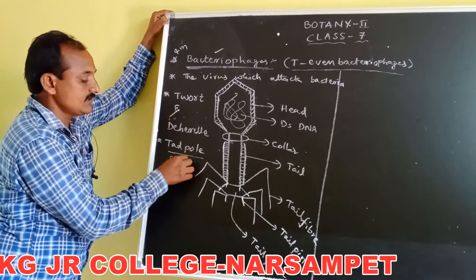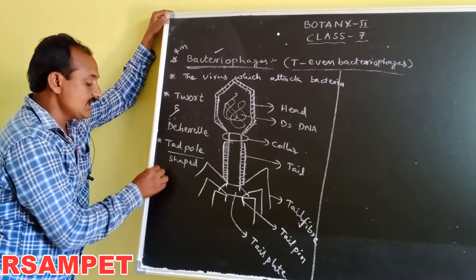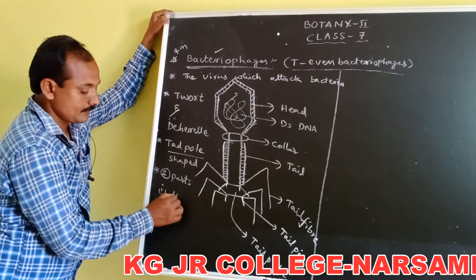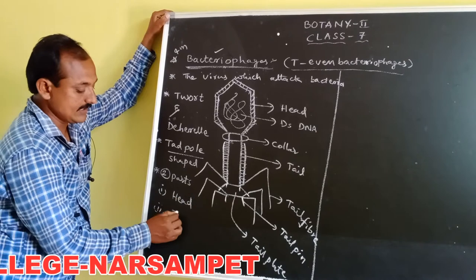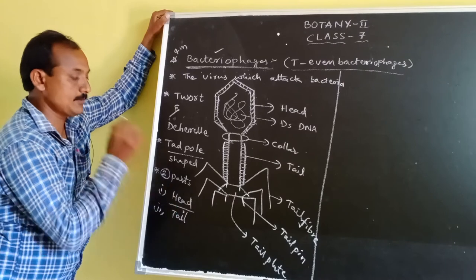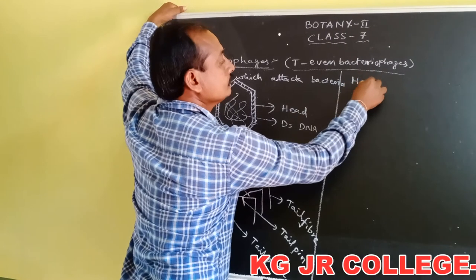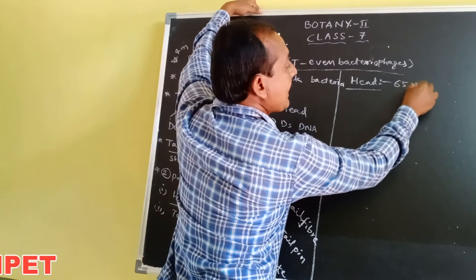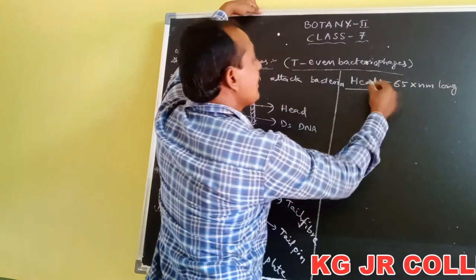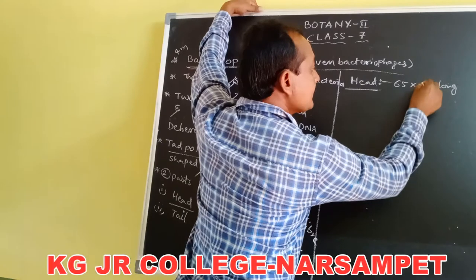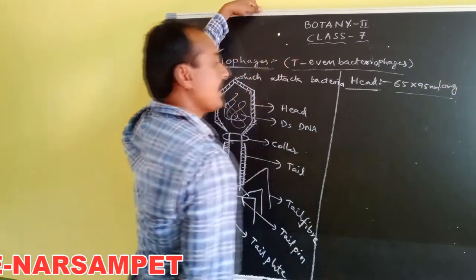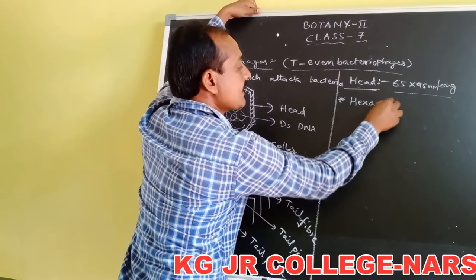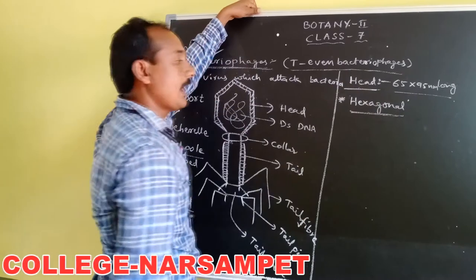Each bacteriophage is a tadpole-shaped virus, and each bacteriophage consists of two parts: head and tail. The size of the head is about 65 into 95 nanometers long. The shape of the head is hexagonal in shape, consisting of six corners.